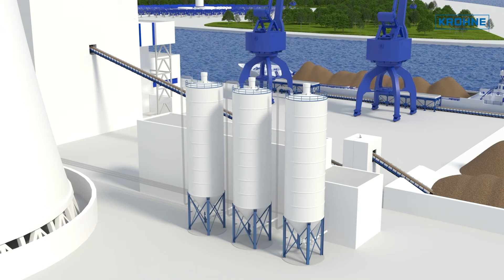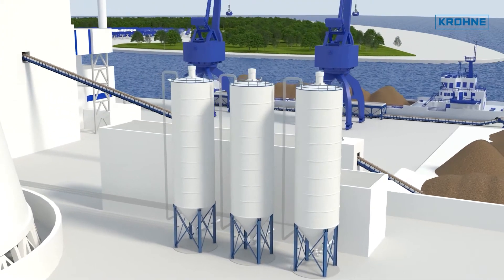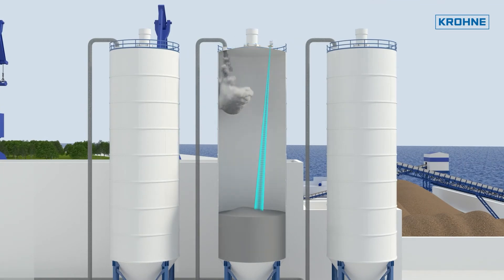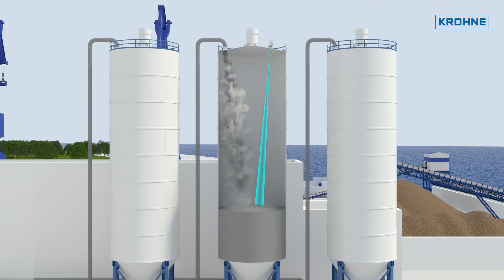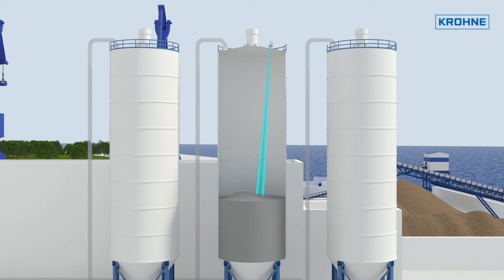Conveying usually takes place at intervals with a blast of transport air. Buildup in the delivery line is prevented by high flow velocities. The fly ash falls down into the silo, and the excess transport air escapes into the atmosphere via a filter. The filling and management of the various silos is monitored and controlled via continuous level measurements.